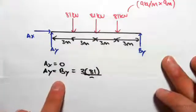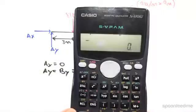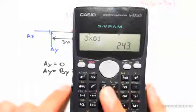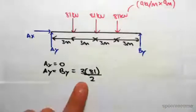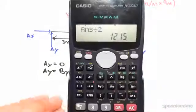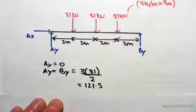So AY equals BY, which equals three times 81. So we have three dots of 81, which is 243. Divide that by two to split between the reactions. We get 121.5 kilonewtons.